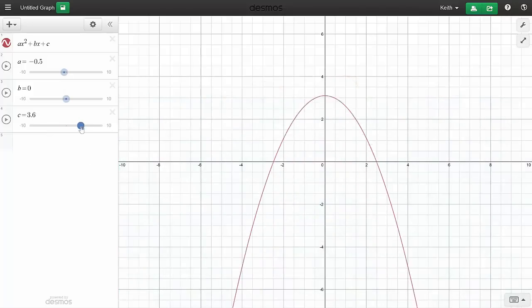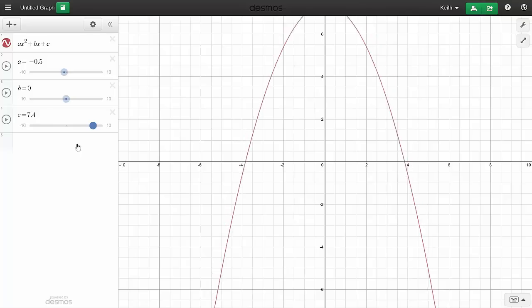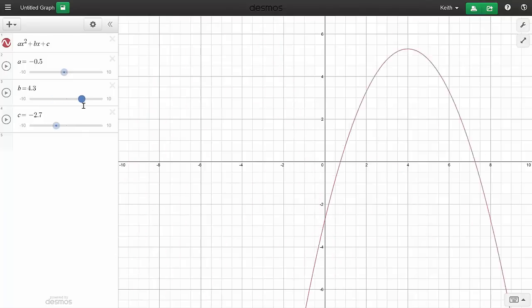The variable c will control the y position of the parabola. Specifically, it controls the y-intercept, or where the shape crosses the y-axis. And the b variable shifts the parabola to the left or right while maintaining the y-intercept.